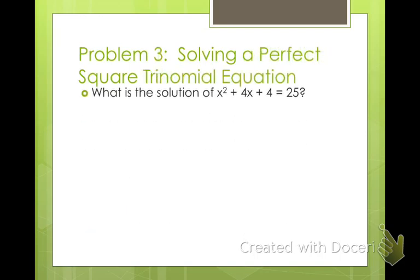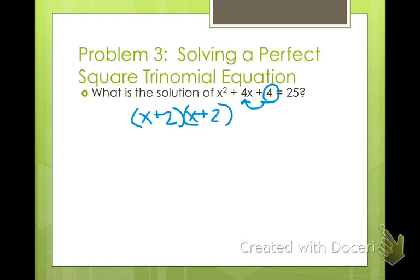Alright, solving a perfect square trinomial. If you look at this: x squared plus 4x plus 4. If we were to factor x squared plus 4x plus 4 — x and x both have to be positive, and one of my possible multiples of 4 that add up to be 4 is 2 and 2. Can you see that this is (x plus 2) quantity squared? So you get (x plus 2) quantity squared equals 25.